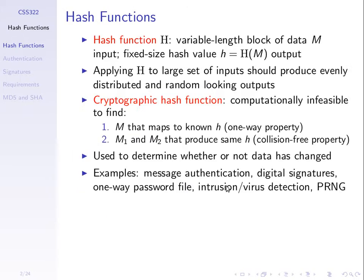What is a hash function? We can start by saying that a hash function is some function that normally takes a variable size input — the input of that function could be of any length, in this case denoted as m — and produces a fixed size output, the hash value we call it. The hash function is usually written as uppercase H. The hash of some message produces a hash value, or simply just a hash, which is denoted as lowercase h.